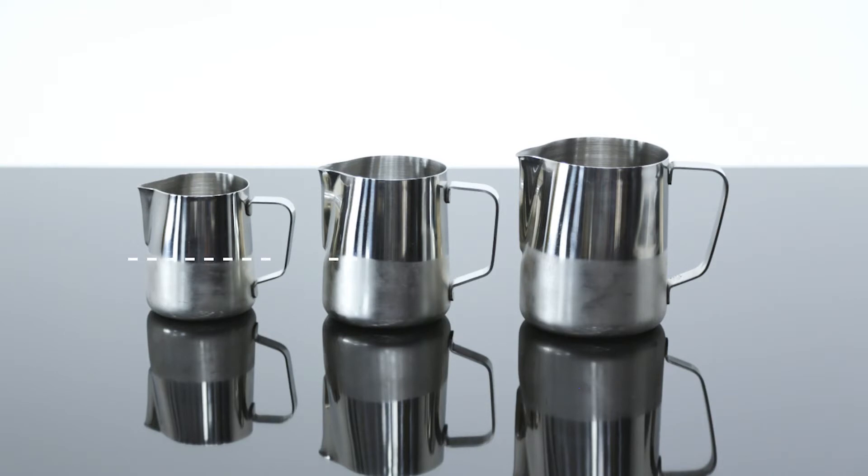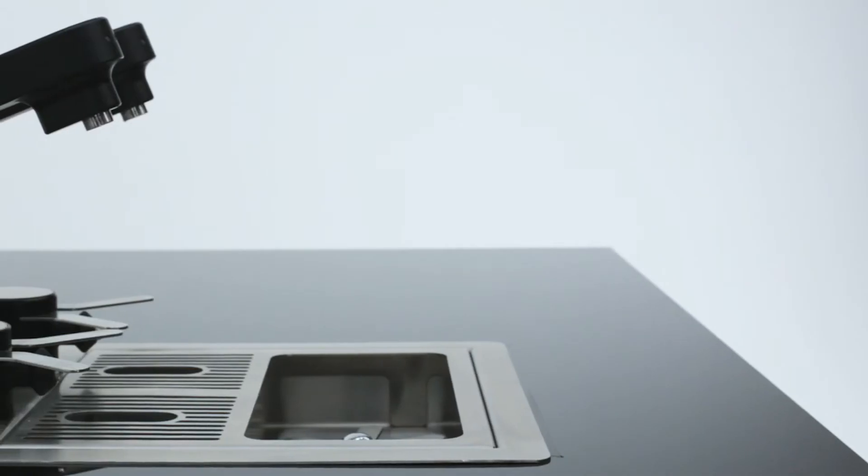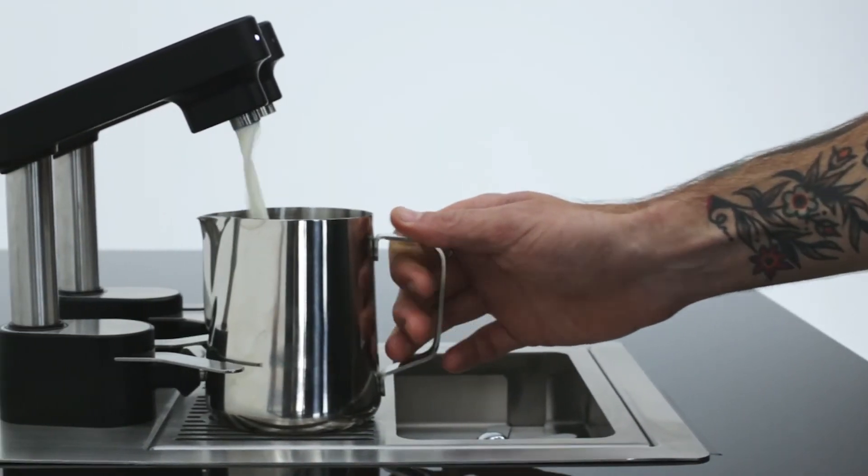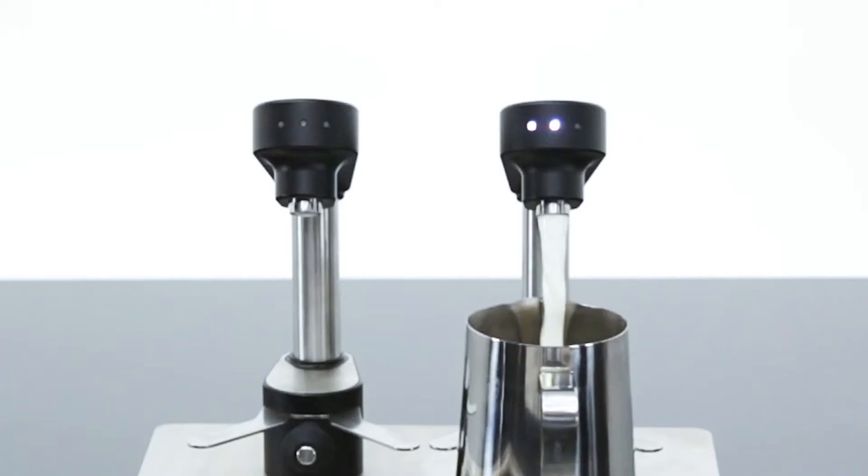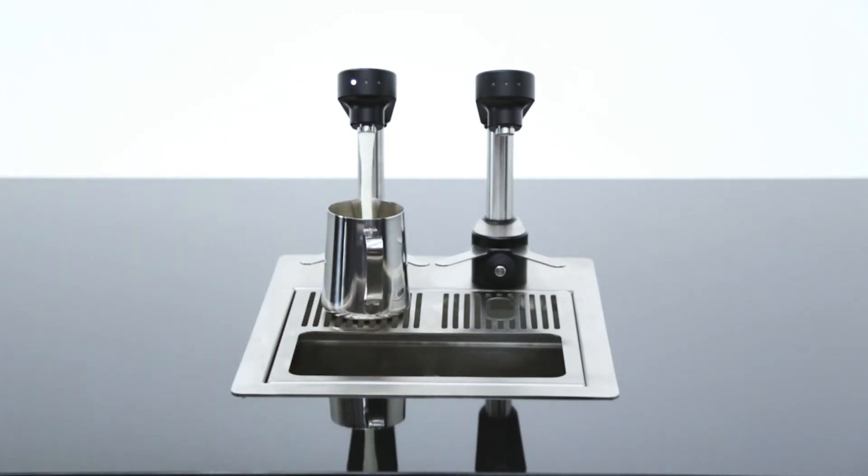For each jug size, you can program and dispense two different dose volumes. We call this primary and secondary dosing. To activate a primary dose, use a push and release action. Lights in the tap come on confirming that the jug size has been correctly recognized and they remain on during the dose, indicating that the primary dose has been activated.